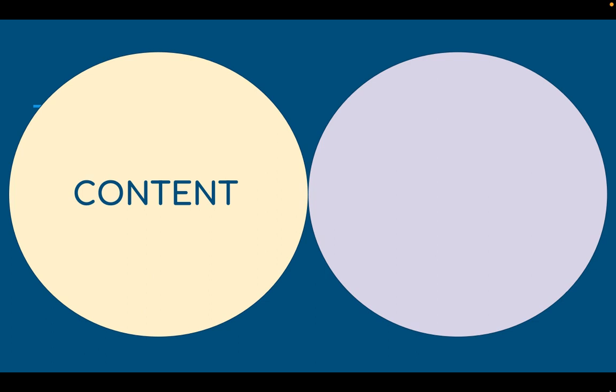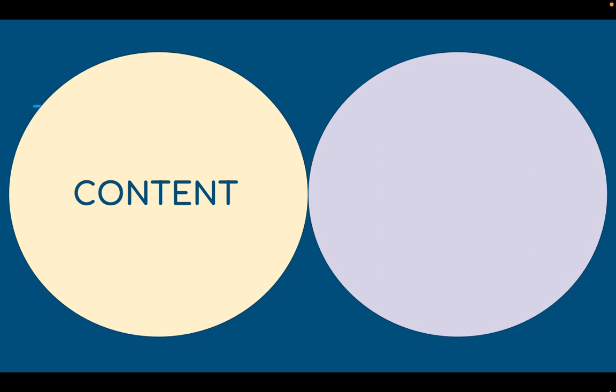Differentiating content is differentiating what students learn. When teaching literacy, you may be teaching a specific reading skill like annotation of higher level text to aid comprehension. However, you might allow a choice of articles based on student interests. It is important to note that the same essential skills and standards are being taught. However, there is some level of differentiation in the content being delivered.